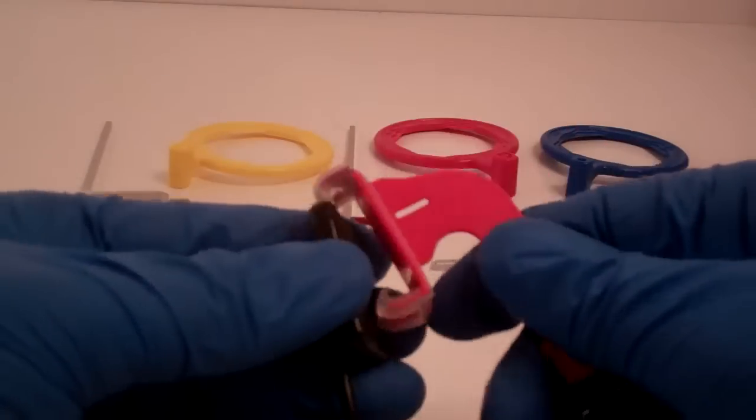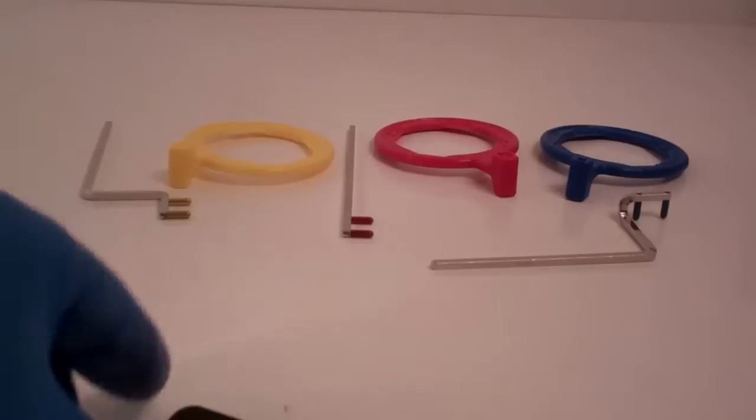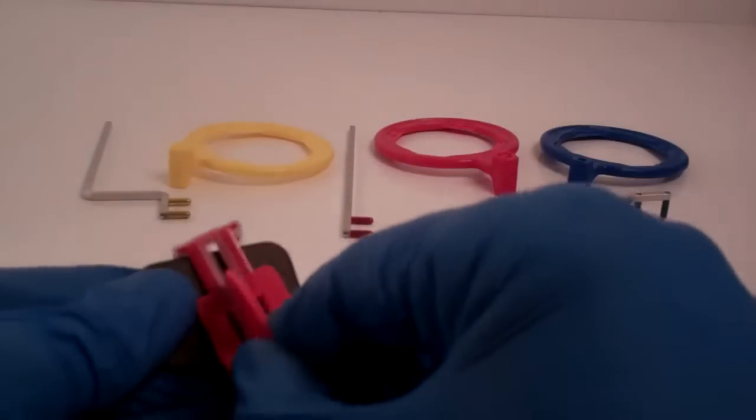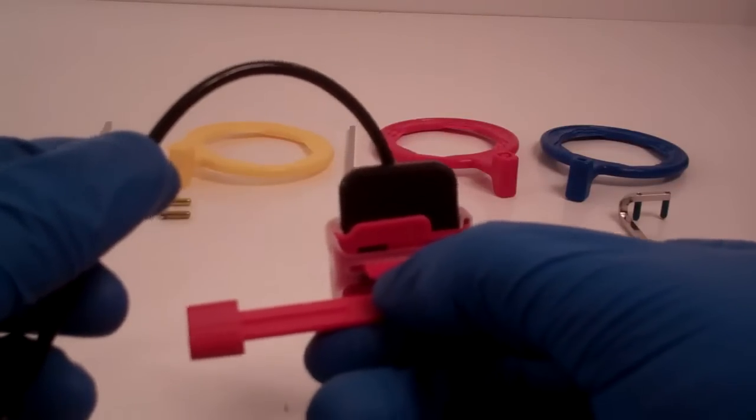And again, that one bite block works with both size 1 and size 2. And there's a vertical bite wing option as well if you prefer to take some vertical bite wings. You want to keep the cord towards the top of the mouth when you're doing the verticals.